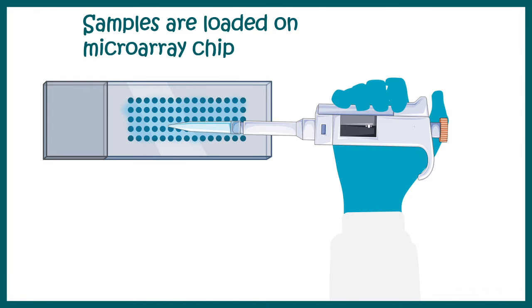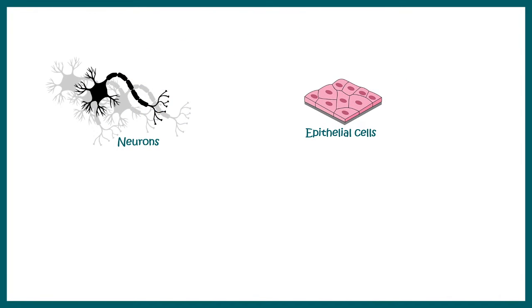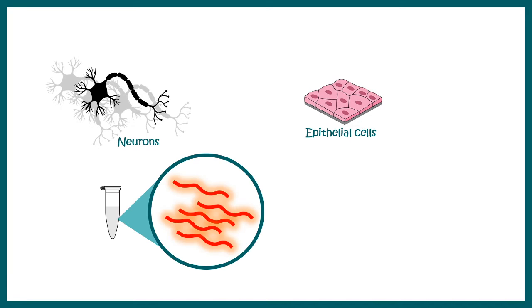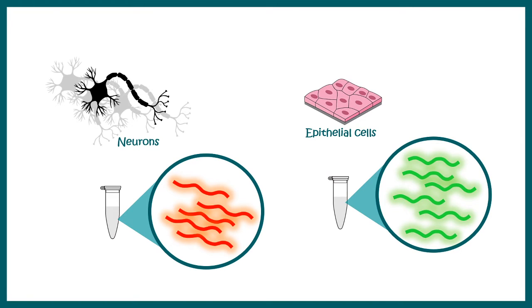Let me remind you that in these microarray chips, the cDNA which are loaded are differentially labeled. For simplicity, let us imagine that the neurons give rise to these red labeled cDNA, whereas the cDNA of epithelial cells are green labeled. So these labels are fluorescent labels and this can be achieved by using fluorescently labeled nucleotides while synthesizing the DNA.